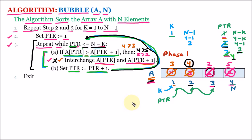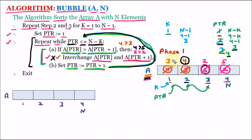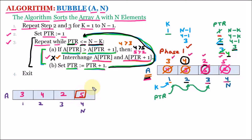For better understanding, I am recreating the array. After pass 1, the elements are 3, 4, 2, 5. After phase 1 we can observe that 5 is the largest element and has moved to the rightmost position. That's why the algorithm is called bubble sort — after every phase, one element reaches its correct position: the largest first, then second largest, and so on.